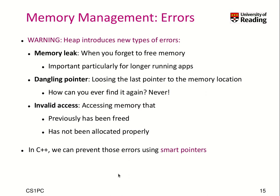There's a problem when we use the heap: we get new types of errors to deal with as a programmer. First is a memory leak — if we forget to free memory, it stays occupied. If a repeated procedure hogs more and more memory, at some point the application will crash. This is especially important for long-running applications, and is often the cause when games crash. Second is a dangling pointer — if you lose the last pointer to a memory location, you can never find that memory again. Third is invalid memory access — trying to access memory that has been freed or not properly allocated leads to a violation and often crashes the application.